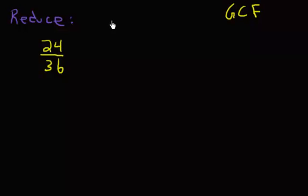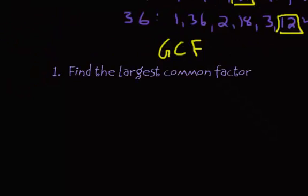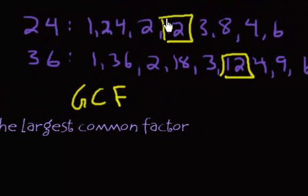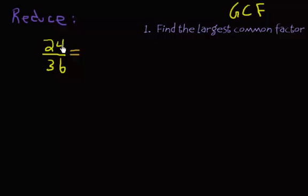So here's the rule. Step 1 would be to find the largest common factor, or what we called the GCF. So when you look between 24 and 36, we already found that it's going to be 12. So what we can do is say 24 is really just 2 times 12. And then 36, that's really just 3 times 12.